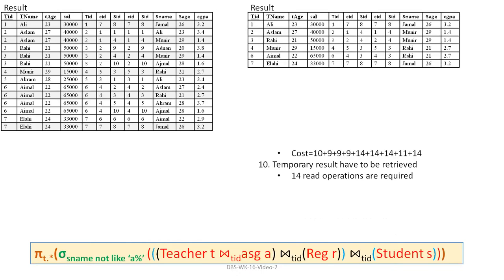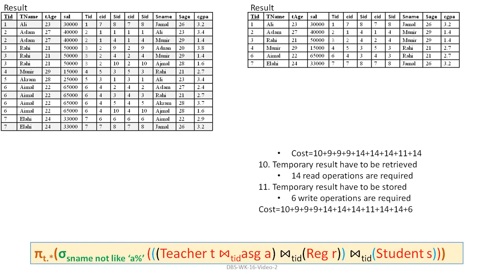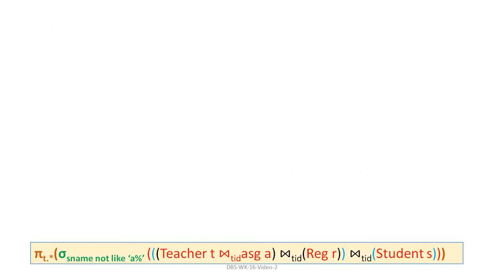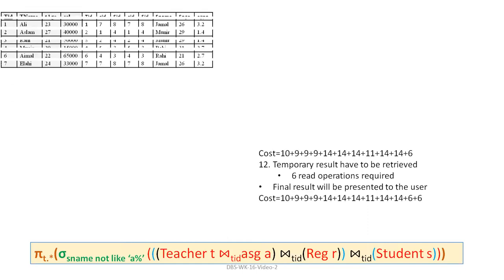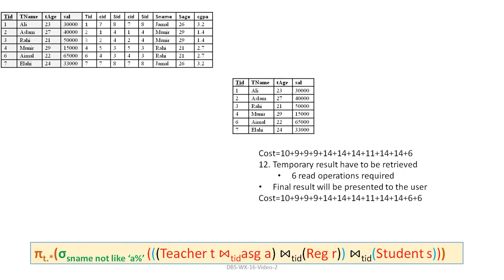After this, selection (sigma) must be applied. The 14 results must be read — 14 read operations. After applying the condition, the result is 6 records (3 + 3). These 6 results are written — 6 write operations. The cost increases by 14 + 6.